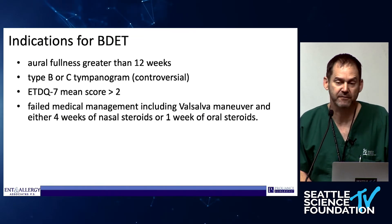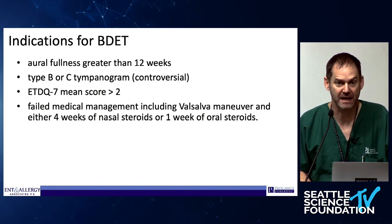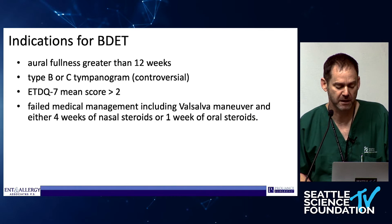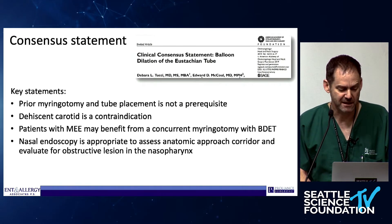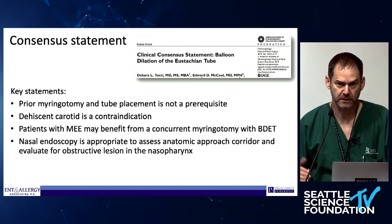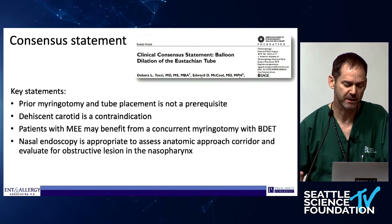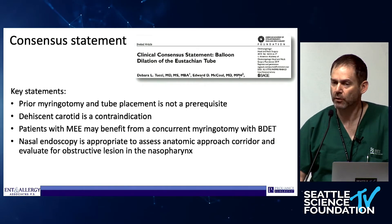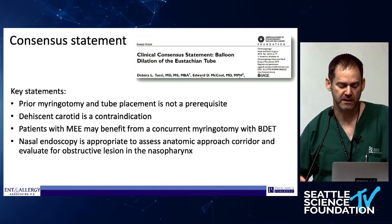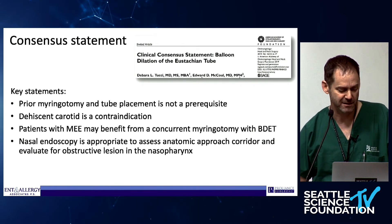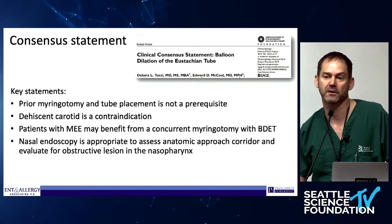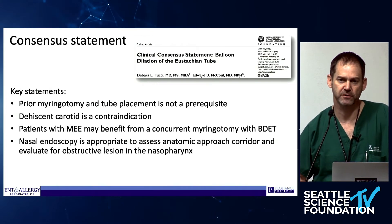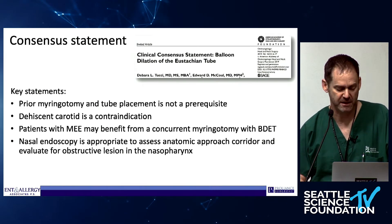These are the important criteria: you have to have symptoms for greater than 12 weeks, a type B or C tympanogram — and that's the part where we have to push back against payers — and the eustachian tube dysfunction questionnaire needs to be greater than two, plus failed medical management. Ed McCool led a nice clinical consensus statement that really helps support us. You don't have to do a prior myringotomy — that was one of the initial criteria. Don't do it on a dehiscent carotid. Patients with middle ear effusion might benefit from a myringotomy at the same time as balloon dilation, as research shows this probably improves success rate.